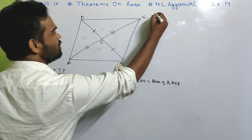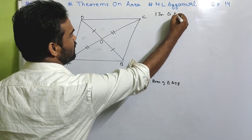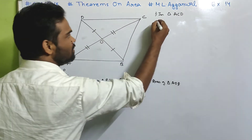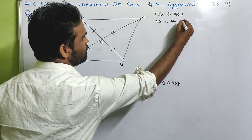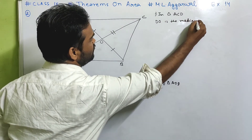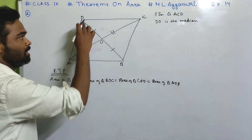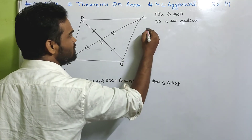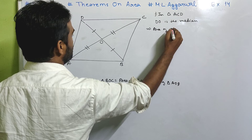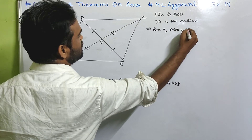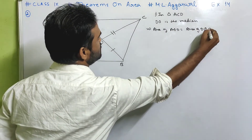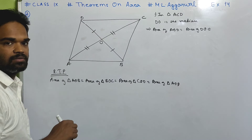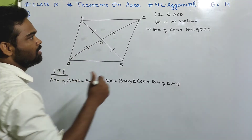In triangle ACD, AO equals OC, which means DO is the median. The median divides the triangle into two triangles of equal area, which means area of triangle AOD equals area of triangle DOC. That is equation one.